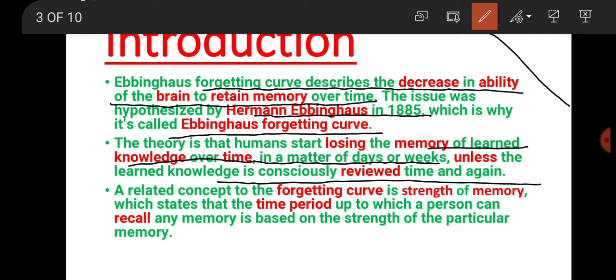A related concept of forgetting curve is the strength of memory. The forgetting curve states that the time period up to which a person can recall any memory is based on the strength of that particular memory. Your memory strength and others' are different. All people have different capacity for memory strength. So forgetting curve also tells us how our strength of memory is linked with time period and how we recall.